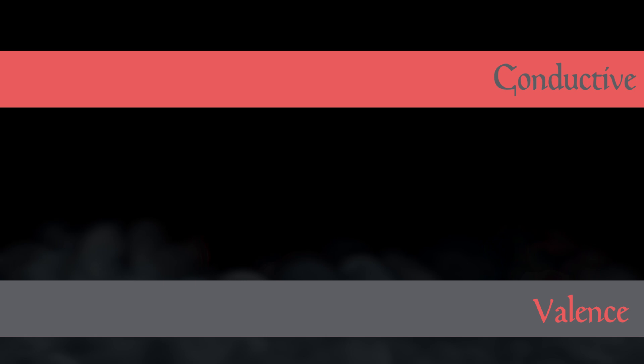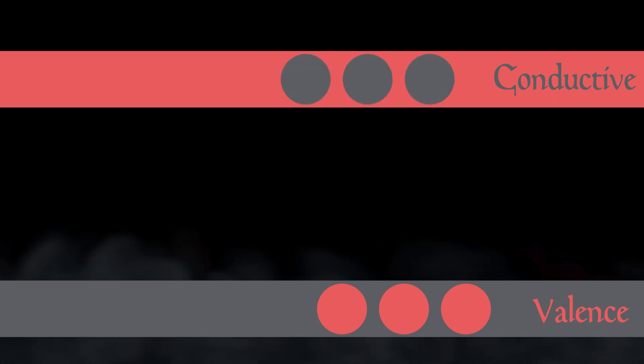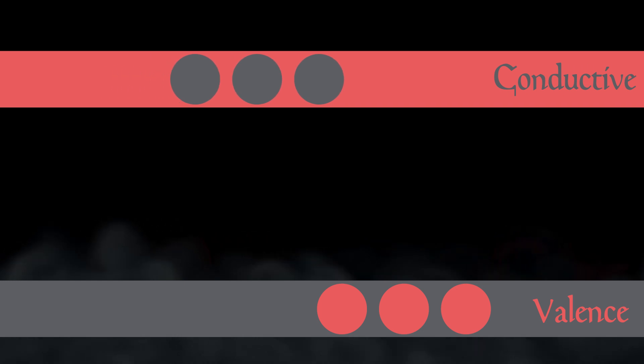forming valence bands and conductive bands. The electrons in the valence band are bound to their respective atoms, however the electrons in the conductive band are free to move around. And the space in between the bands is called the energy gap.